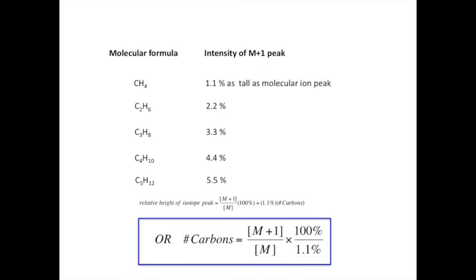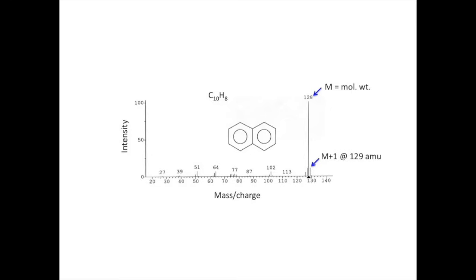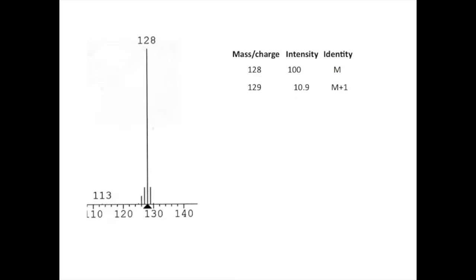Let's see how that applies to the last example. Here we have a cluster of ions at the high mass end and the relative intensities. We divide the 10.9 by 100 and multiply by 100% over 1.1%, and we get approximately 10 carbon atoms. Real data have some uncertainty associated with them, so we don't expect an exact integer. When the signals are weak, the relative uncertainty may be large, and we have to be prepared to be flexible in our conclusions.